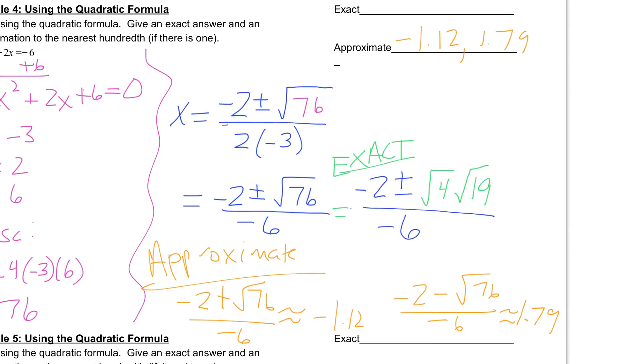Next, what we're going to do is we can evaluate the square root of 4. So we have negative 2, plus or minus 2, square root of 19, all over negative 6.